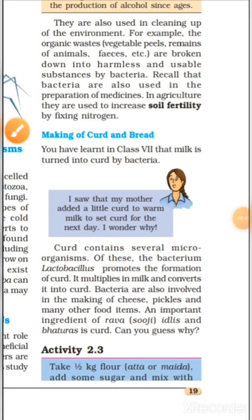An important ingredient of rabha, suji, idlis and bhaturas is curd. (Rabha, idli evan bhature ka ek mahatvapoorn sanghatak dahi hai.) Jivanu evan yeast chawal ke aate ke kidwan mein sahayak hoti hai, jis se idli evan dosa banta hai.